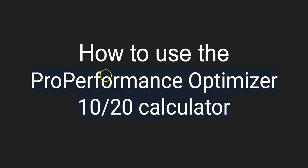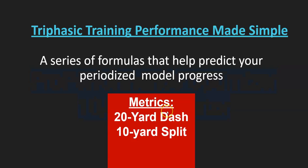I'm talking about how to use the Pro Performance Optimizer by Triphasic Training. It's a 10 and 20 calculator, basically used to help progress your training. So you may be training for a couple weeks, two to three, and then you need to find out what program you need next.